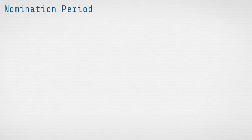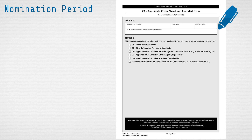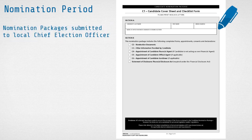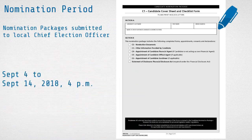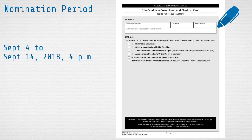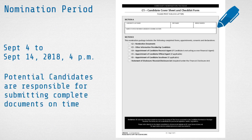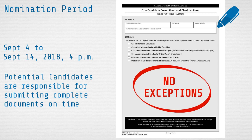Nomination packages must be completed and returned to the local chief election officer or their designate during the nomination period, which is between September 4th and 14th at 4pm local time. It is the potential candidate's responsibility to ensure the nomination documents are delivered to the local government before the deadline, filled out completely and correctly. This deadline is legislated under the Local Government Act, and there are no exceptions.